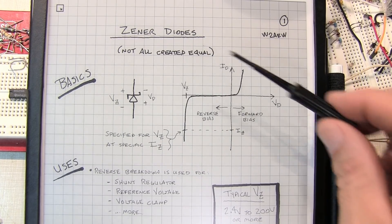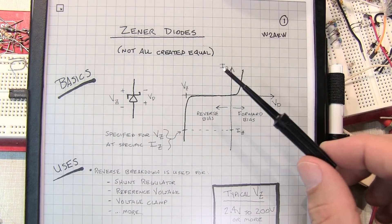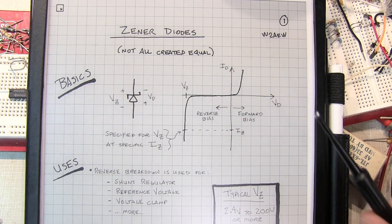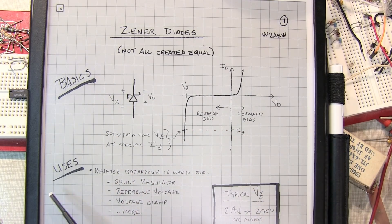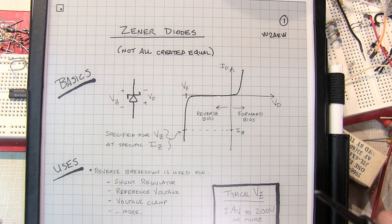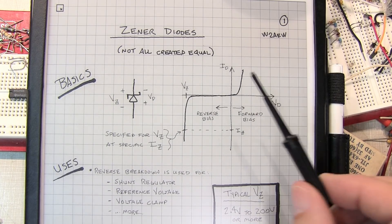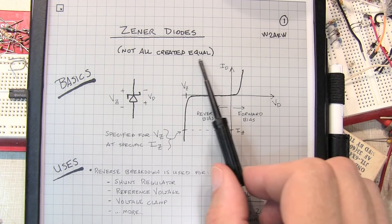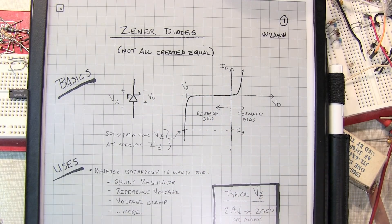In today's Back to Basics video, we're going to talk about Zener diodes. We'll talk about the basics of their characteristics, some of the uses of Zener diodes, and also a little bit about some easy design calculations to employ a Zener diode in your design. In the second half of the video, we'll talk about why all Zener diodes are not created equal.